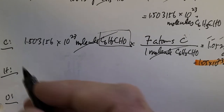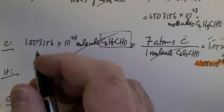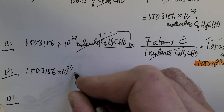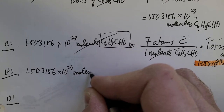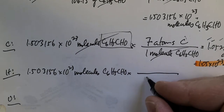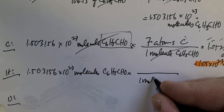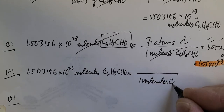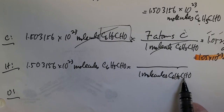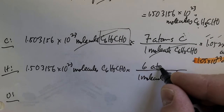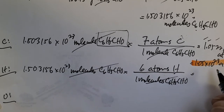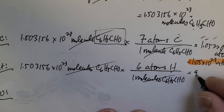We'll do the same thing with H. Start off with how many molecules we have — hopefully you had time to work this out yourself. So, molecules of C6H5CHO: for every one molecule of C6H5CHO, we have five plus one — six atoms of H. Plugging that into the calculator gives us 9.01893×10²³ atoms of H.